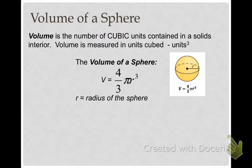Now, the volume of a sphere is a little bit different. It's 4 thirds times pi r cubed. You have to pay attention because it is in units cubed. So, it's not pi r squared. It's pi r cubed, where r is the radius of the sphere.